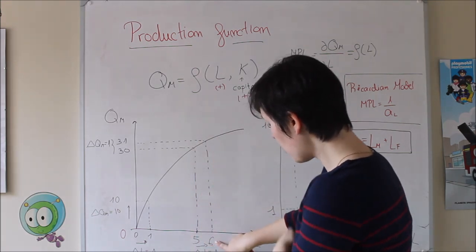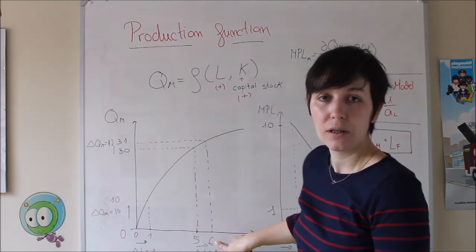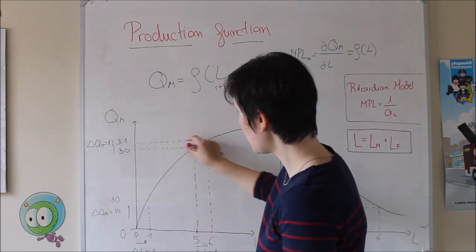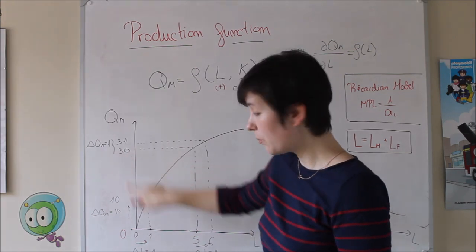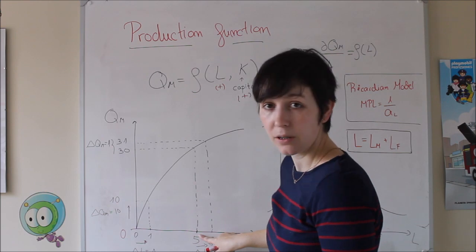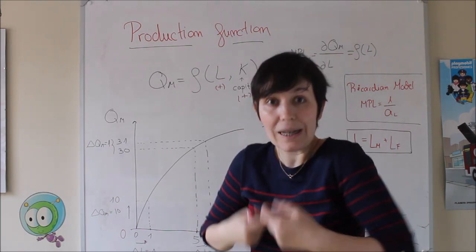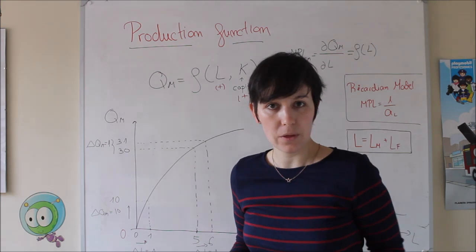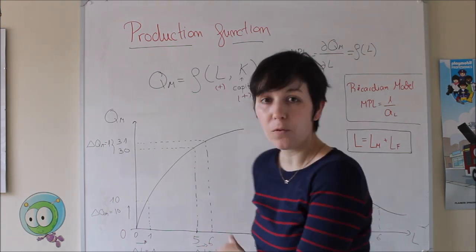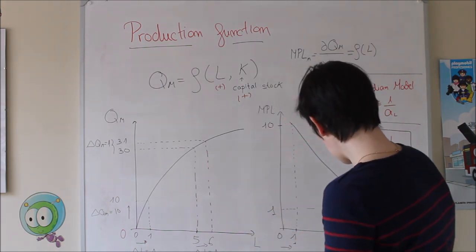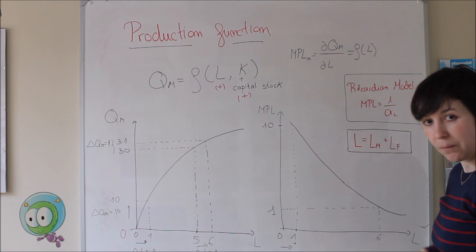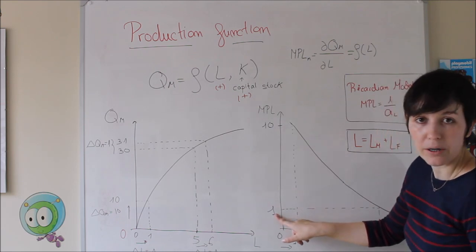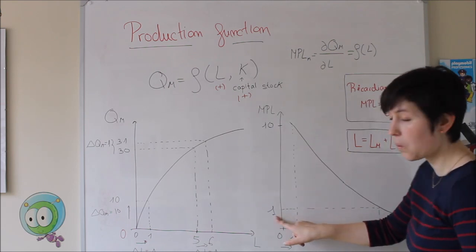The production increases, but at a smaller rate. We can also draw the marginal product of labor for these workers. The new worker at 6 workers is just producing one unit more, because the previous 5 workers produced 30 units. The last marginal worker is just adding one unit to the whole production, so the marginal product of labor for the sixth worker is just one.